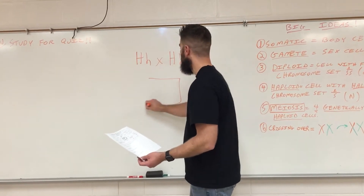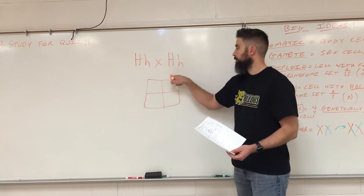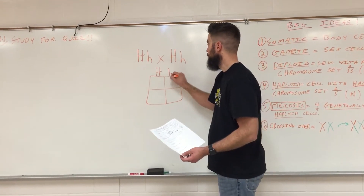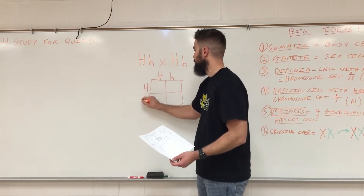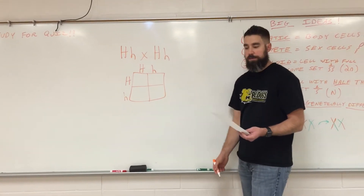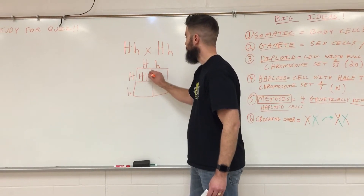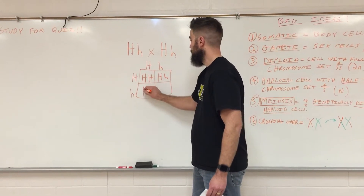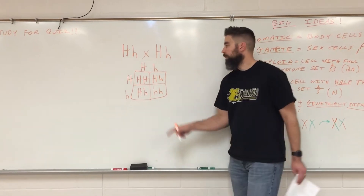Draw our little windowpane. One parent goes up top — separate the alleles. Then one parent goes on the left side — separate the alleles again. Now we're just going to fill in our boxes. So here's going to be big H, big H; big H, little h; big H, little h; and then little h, little h. So you have the different scenarios.